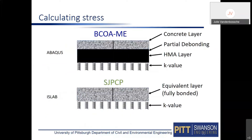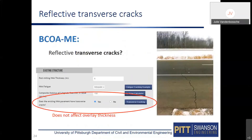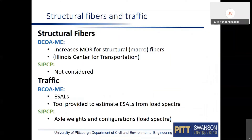A question confirms that BCOA-ME is a mechanistic procedure. The process involves generating a database of responses using ABAQUS models, then developing neural networks for rapid prediction — similar to Pavement ME. To account for temperature, the tool was decoupled from the Enhanced Integrated Climatic Model: by entering geographic location and pavement structure, it accounts for an equivalent damage based on asphalt temperature — which correlates to asphalt stiffness — and an effective equivalent linear temperature gradient.